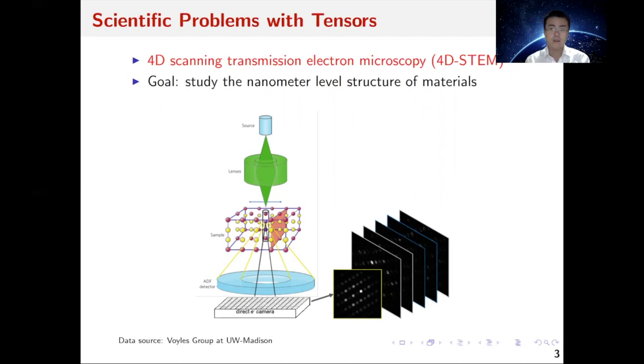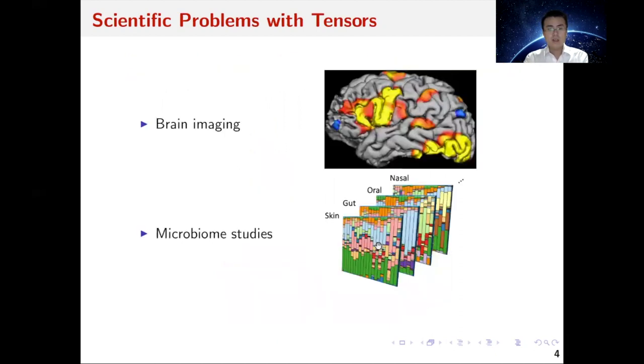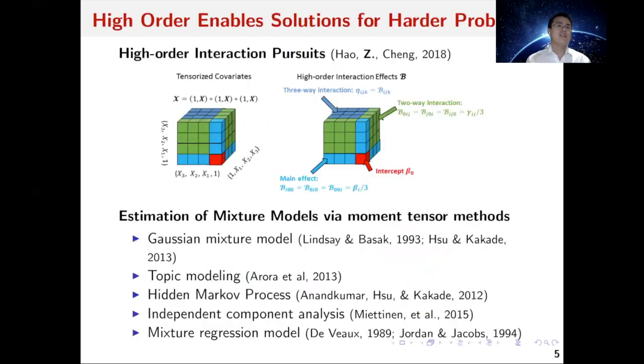Tensor-type datasets also naturally appear in other scientific research problems like brain imaging analysis and microbiome studies. In many scientific problems, although the datasets themselves are not tensors, by transforming the data into a tensor format things can become easier. Two examples are high-order interaction pursuit and estimation of mixture models via moment tensors.